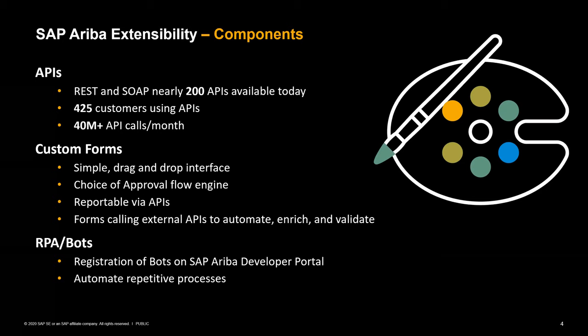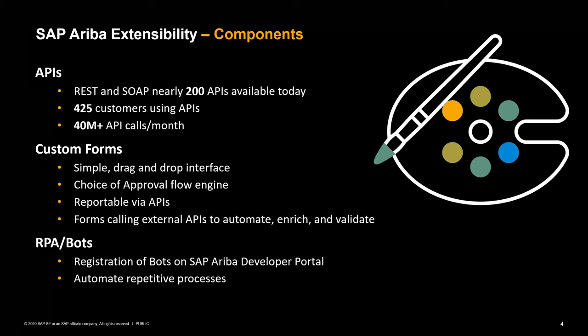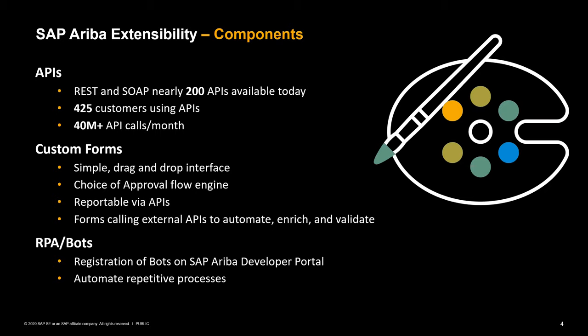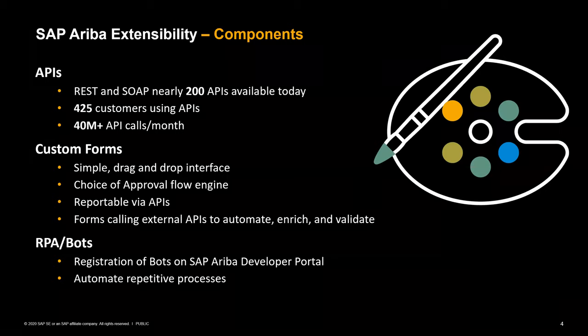The next extensibility option is custom forms — a simple drag-and-drop interface that allows you to choose your approval flow engines, with options such as classic or custom approval flows that you can configure similar to a buying and invoicing environment. These are also reportable via APIs. One of the more interesting things is these forms have the ability to call external APIs, allowing you to automate, enrich, and validate the data in the form. We've seen customers use these in very interesting ways to automate processes and drive significant value.